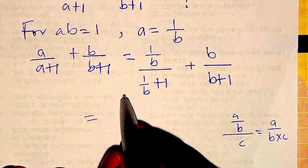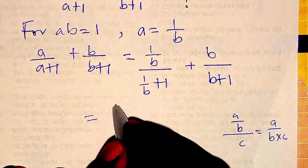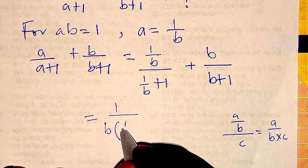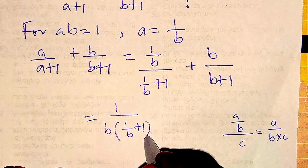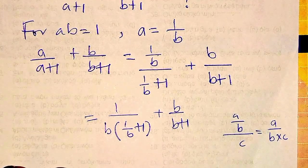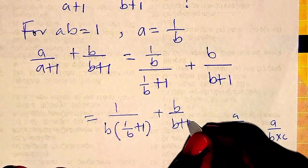So everything here is going to be 1 over B, we have to come down, multiplying 1 over B plus 1, then plus B over B plus 1, right?